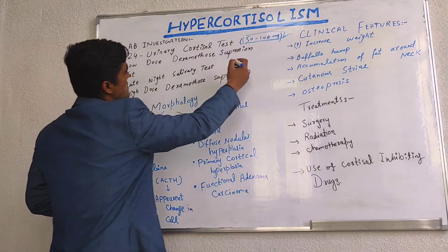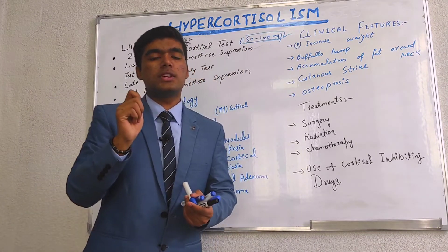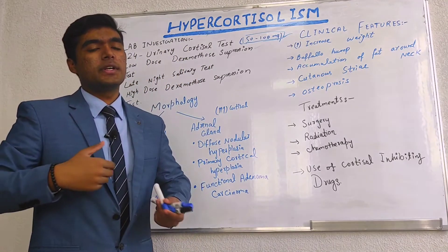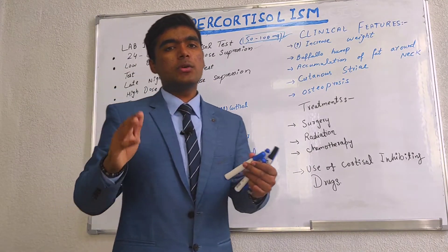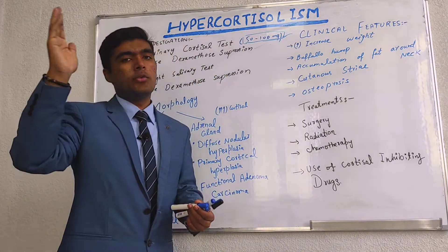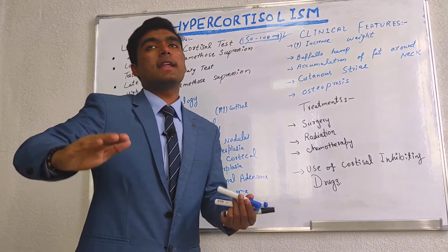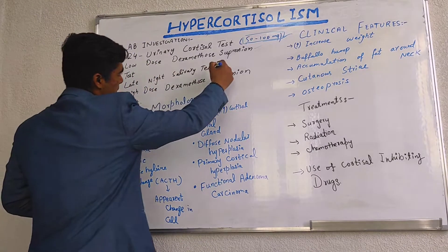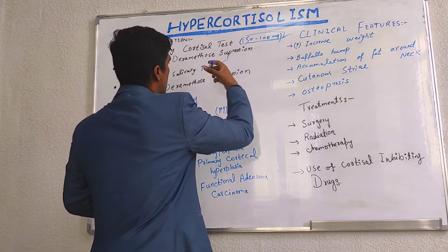The second test is the low-dose dexamethasone suppression test. At 11 PM we give 1 mg of dexamethasone and check the reaction of the adrenal gland in the morning. Normally, a patient without Cushing syndrome will show a low response level, while a patient with Cushing syndrome will show an elevated adrenal gland response. The late-night salivary test is used to check the amount of cortisol in saliva.